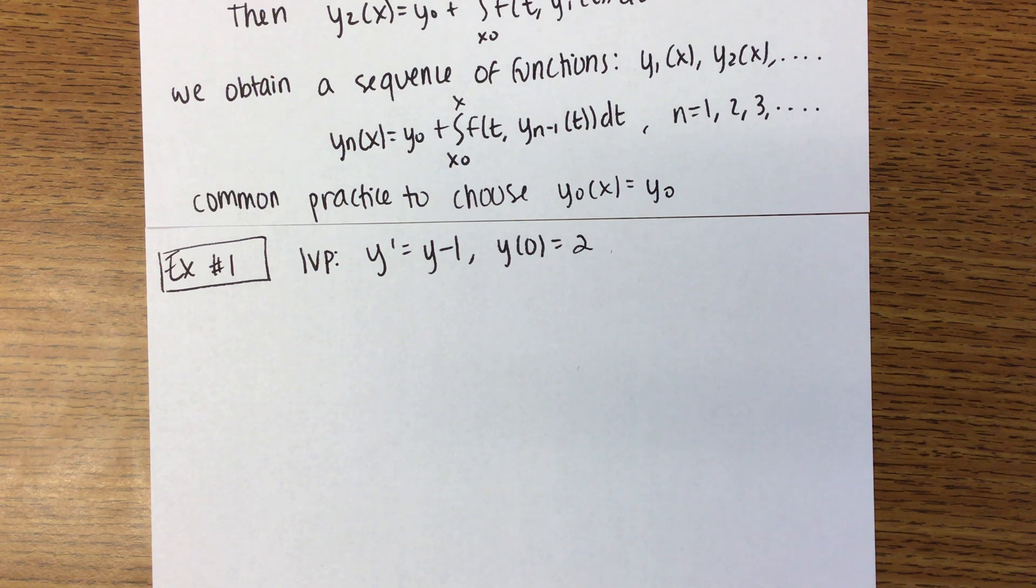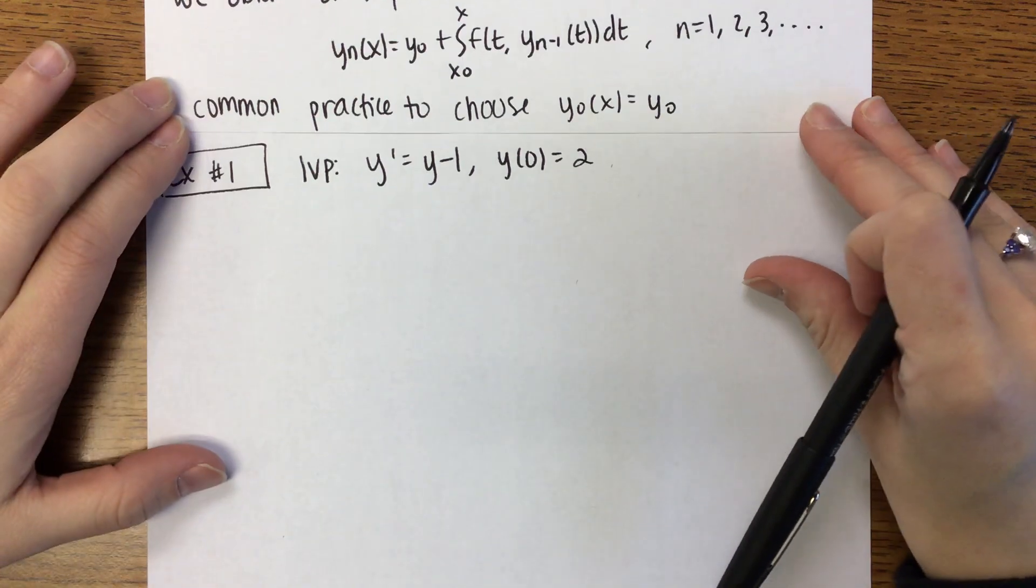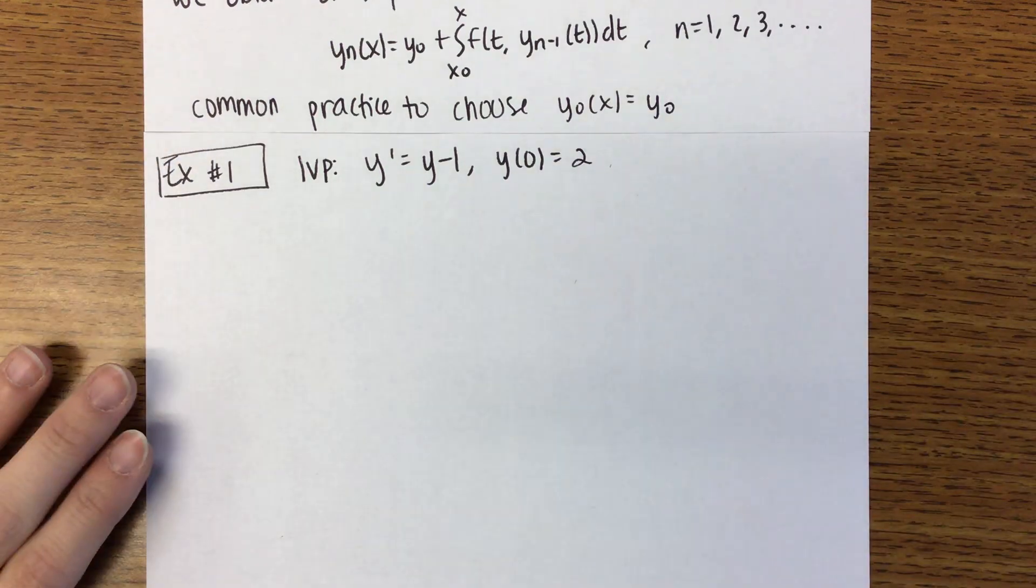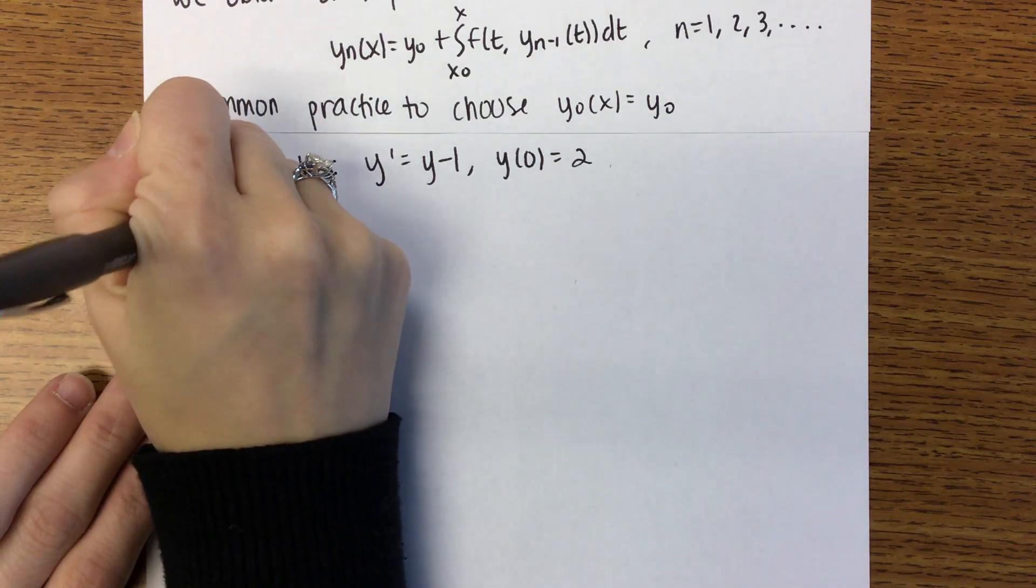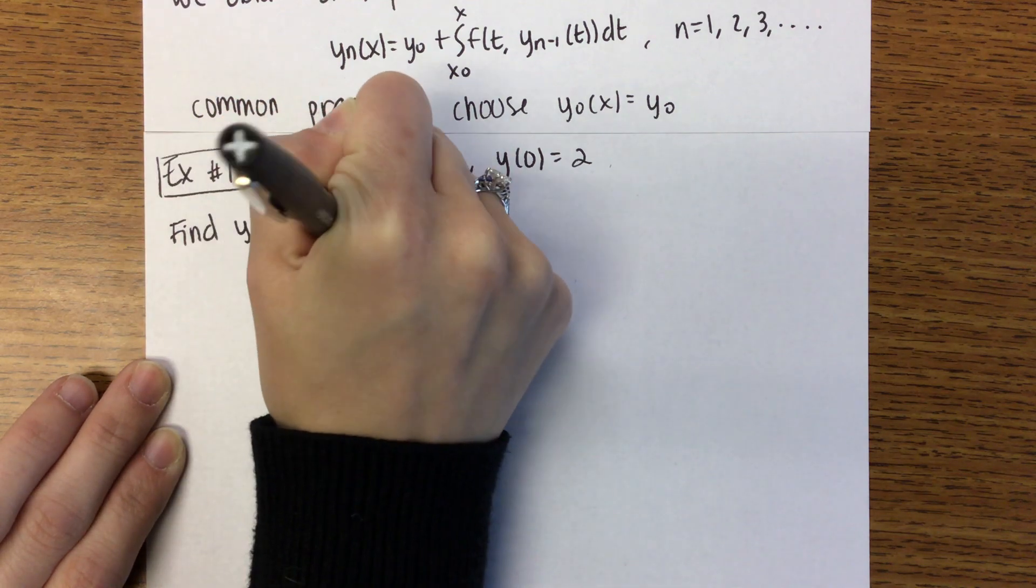Separable. Is that our only option? It's also linear. So separable is probably easiest, but you could also do linear. Okay, so what we're going to do is I'm telling us that we have to find Y1, Y2, Y3, and Y4.